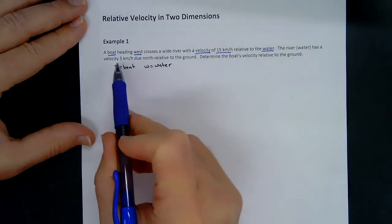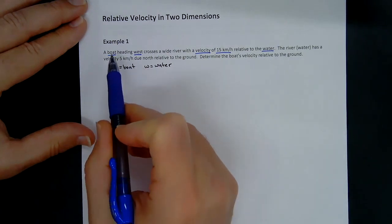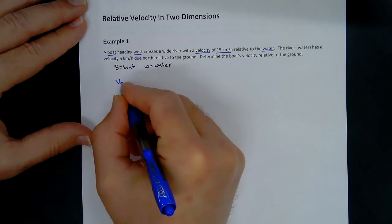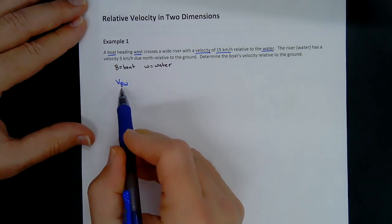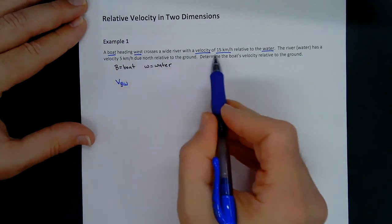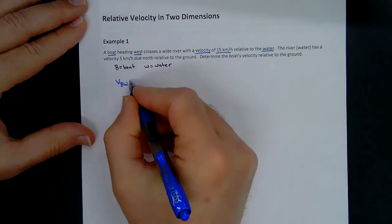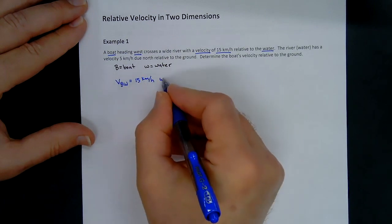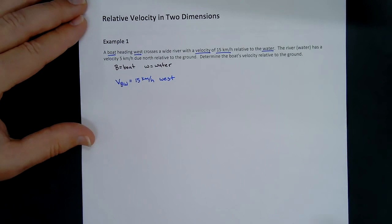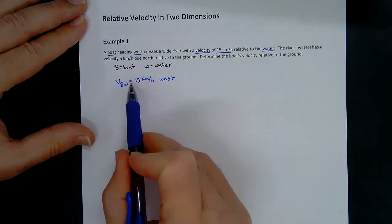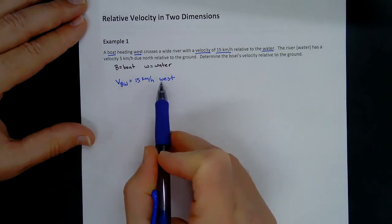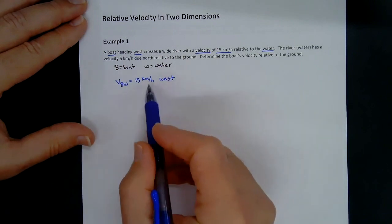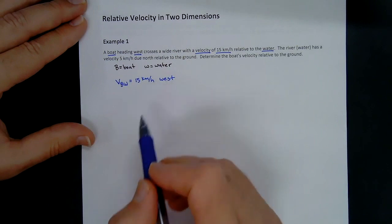What we have is V sub BW — the velocity of the boat relative to the water — and we know it's 15 kilometers per hour west. So this equals 15 kilometers per hour west. The magnitude of this vector is 15 kilometers per hour, and the direction is west — directly west — so no angle is given. We'll draw a diagram in just a moment.